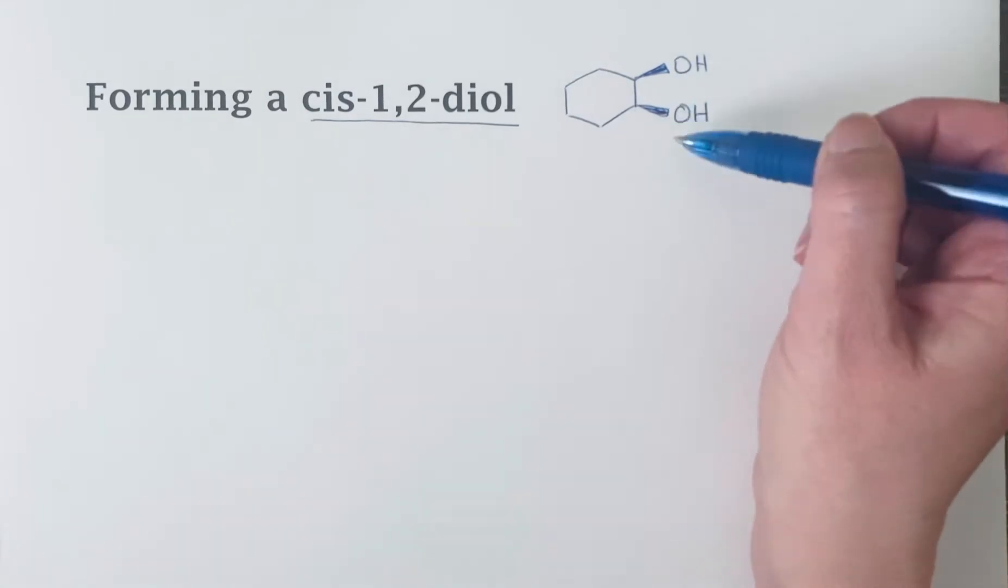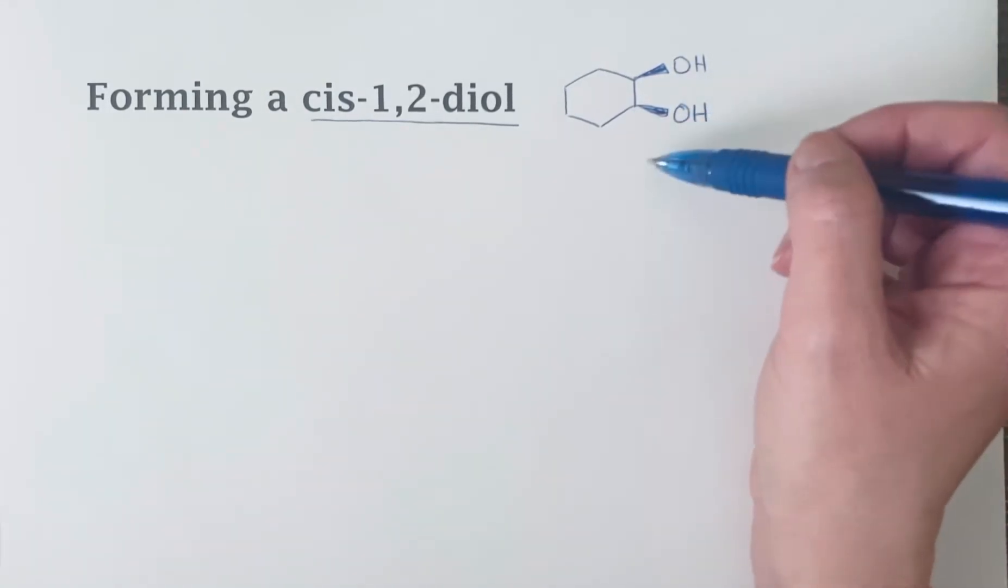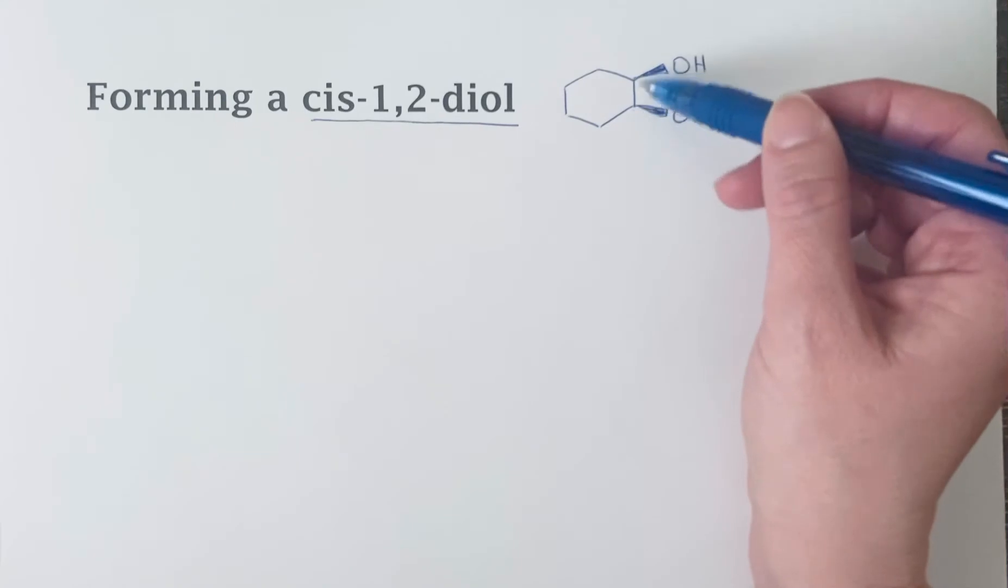The starting material for this is going to be an alkene. Your hint to an alkene starting material can often be that you've got two functional groups on adjacent carbons.